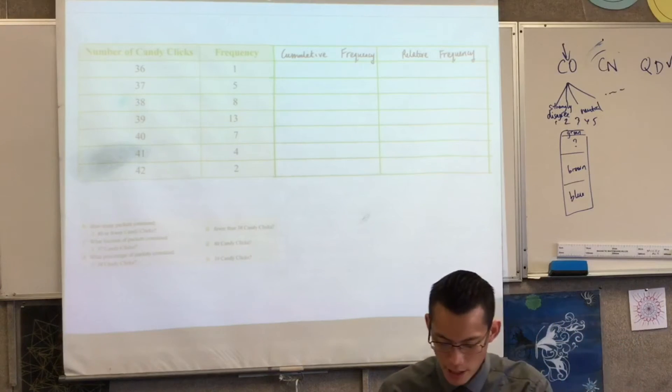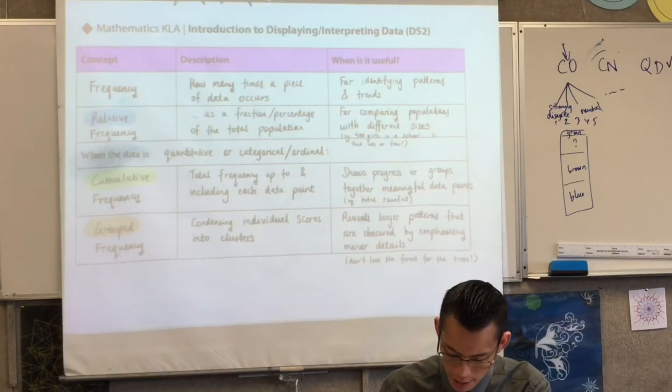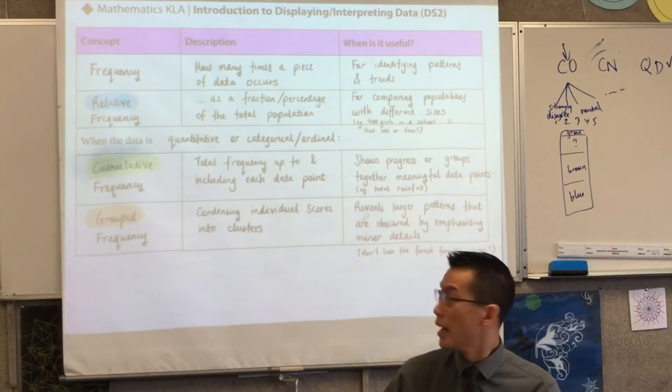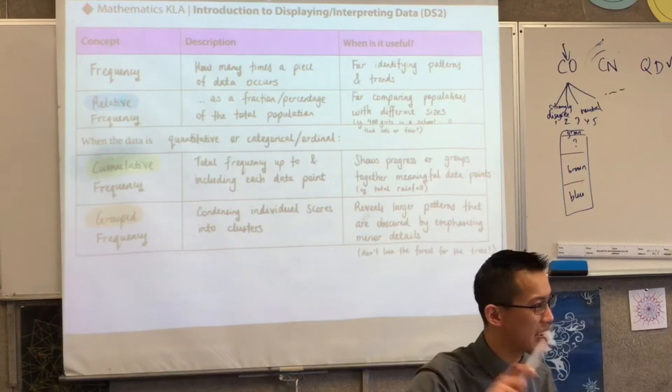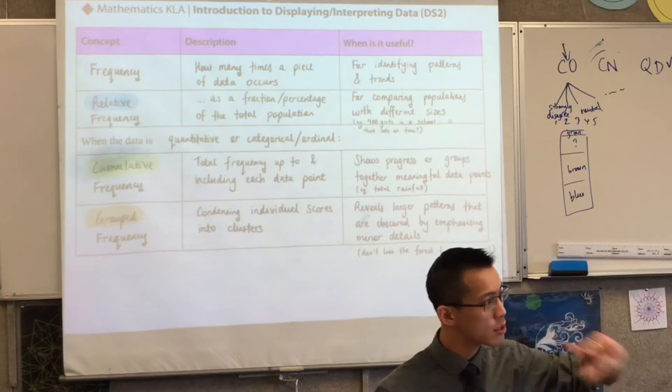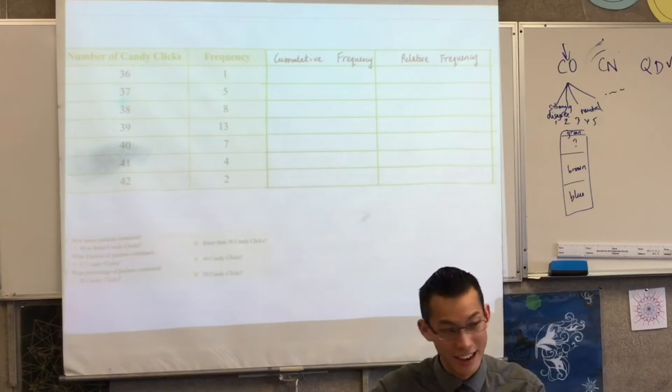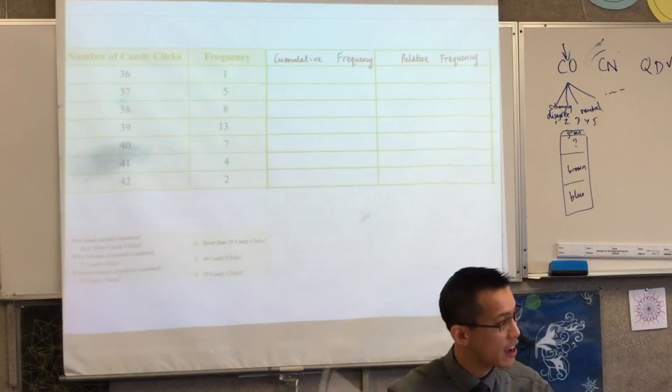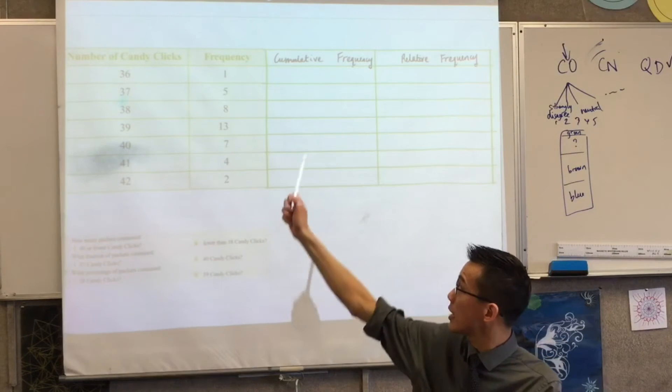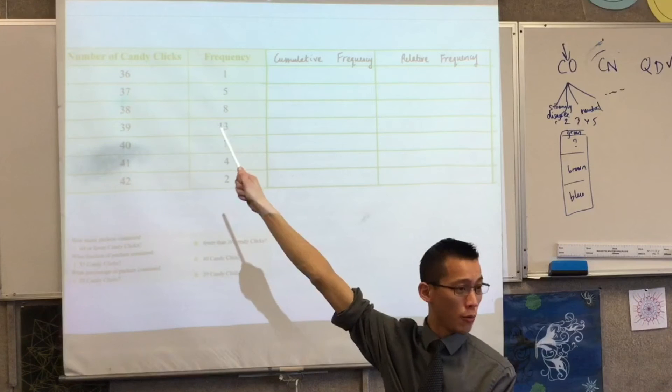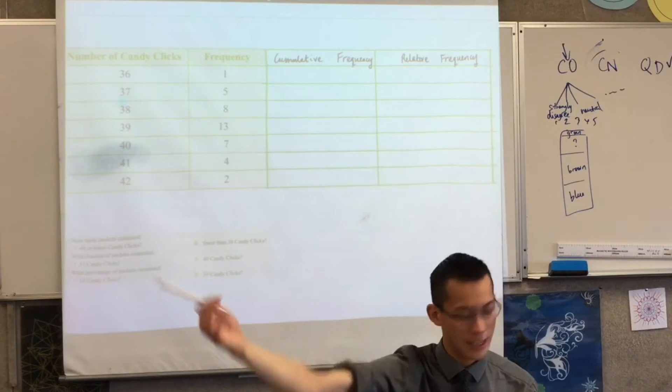Cumulative frequency, let me come back to our definition here of cumulative frequency. It's the total up to and including each one of those points. Okay, so now if I have a look here, candy clicks, some kind of lolly, I have no idea. When I'm working out cumulative frequency I'm just looking at this column over here for normal frequency and I'm adding it up as I go.